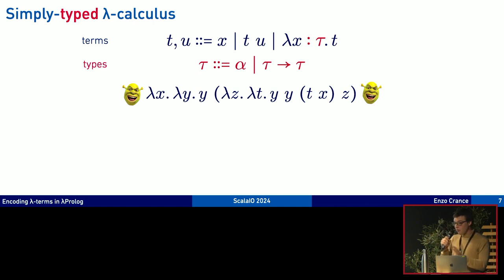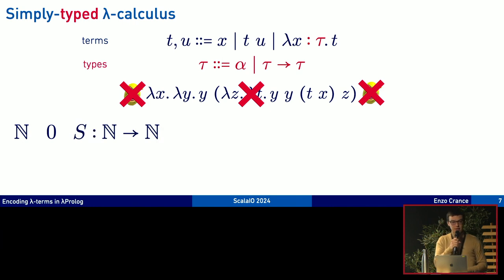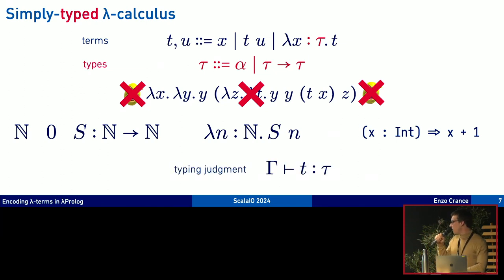We can give ourselves some constants like type n, constant 0 of type n, constant s of type n to n. And now we can write meaningful terms like this one is just a function taking a natural number and returning the successor. And now we have a typing judgment. It reads in context gamma T has type tau. We'll now study how terms can be made well typed in such language.